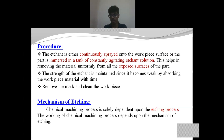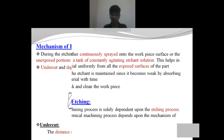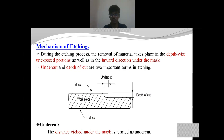Since we have discussed the steps in chemical machining, we can identify that the chemical reaction of the etchant upon the workpiece is the most crucial part of this process. We need to understand some fundamental terms that are essential to understanding the mechanism of etching. There are three such terms: undercut, depth of cut, and edge factor.